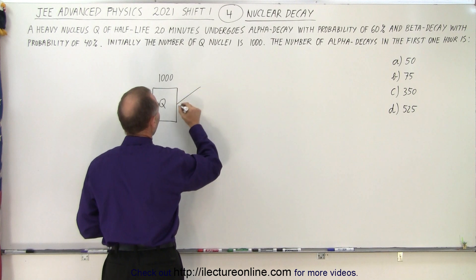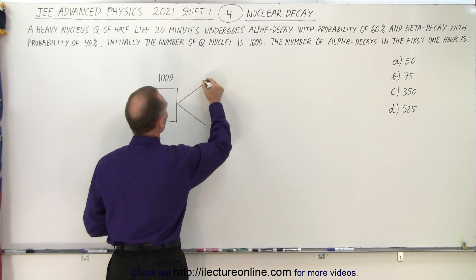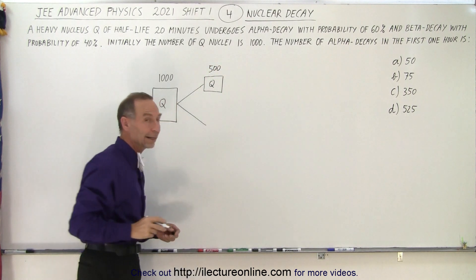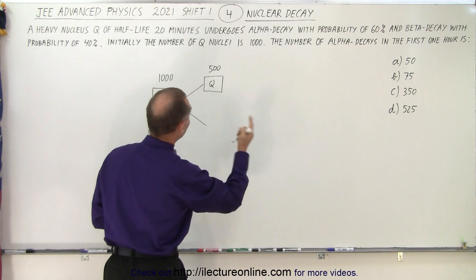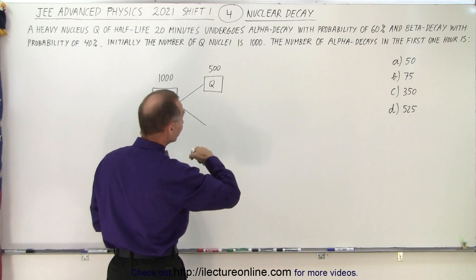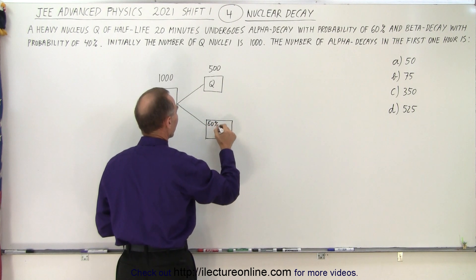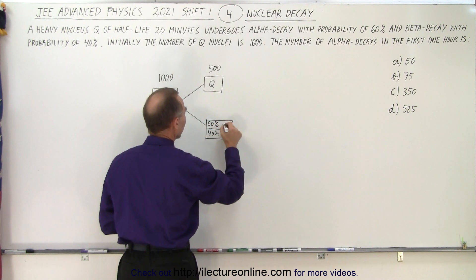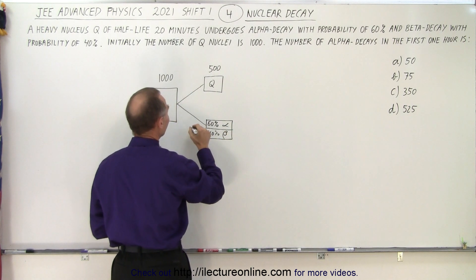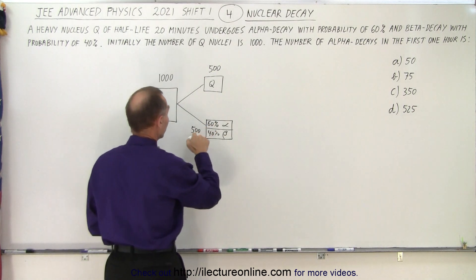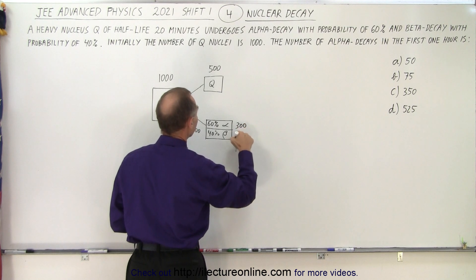After the first 20 minutes, half of them will decay. That means that we have 500 left that are Q nuclei, and of the 500 that decayed, 60% of them will have gone through an alpha decay and 40% through a beta decay. So we have 60% and 40%, alpha and beta decay of the 500 that decayed. So 60% of 500 is 300 alpha decays and 40% of 500 would be 200 beta decays.